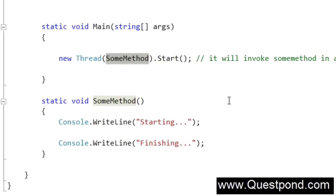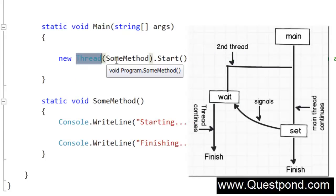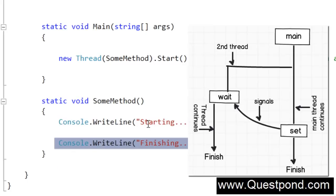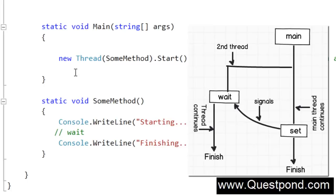In order to demonstrate Auto Reset Event properly, we will do the following. The static void Main will invoke the new thread, which will run SumMethod. SumMethod currently displays 'starting' and then 'finishing'. After 'starting' is displayed, we will make this thread wait. This waiting thread will then be signaled from somewhere in the static void Main to start again.